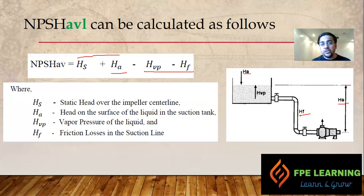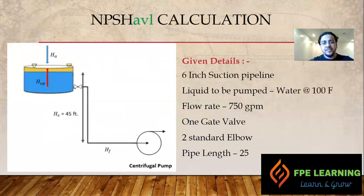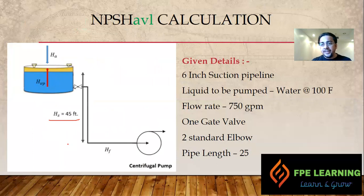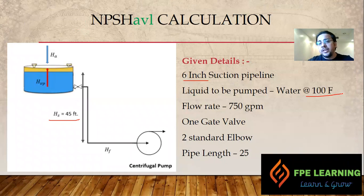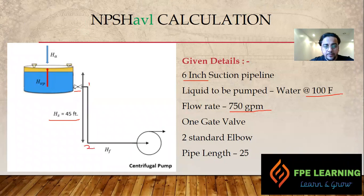Let's work through a calculation for NPSHa. Suppose we have a tank located 45 feet from the centerline of the pump — so static head HS is 45 feet. The suction pipe is six inches in diameter, the liquid is water at 100°F. Temperature matters because vapor pressure varies with temperature. The flow rate is 750 GPM. We have one gate valve, two standard elbows, and the total suction pipe length from tank to pump is 25 feet.